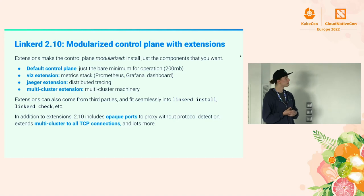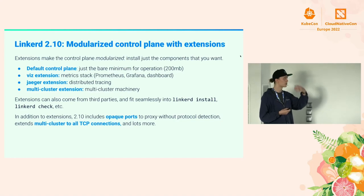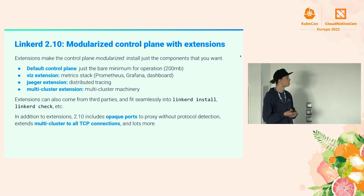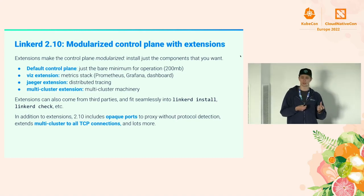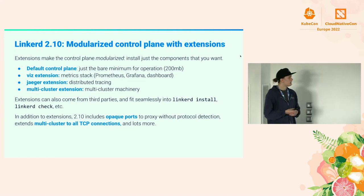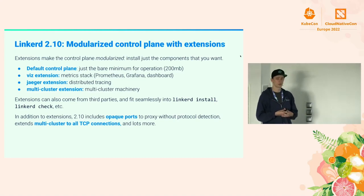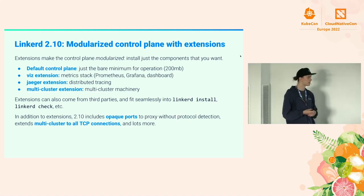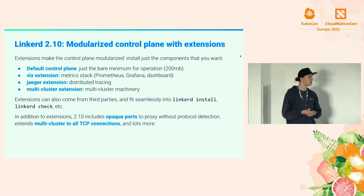For Linkerd 2.10, we split everything out into extensions. We have a Viz extension which is the metric stack — you get Prometheus, Grafana, a Metrics API, and the Linkerd dashboard. If you want to run with it, you can; if you don't, you don't have to. We introduced a Jaeger extension for distributed tracing and a multi-cluster extension. Extensions can also come from third parties — we wanted to give adopters the chance to run their own extensions and integrate with the CLI and check system.